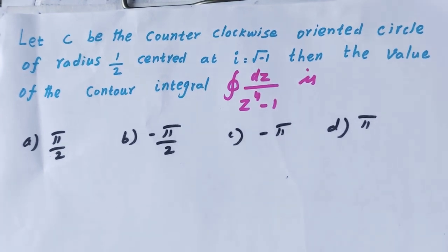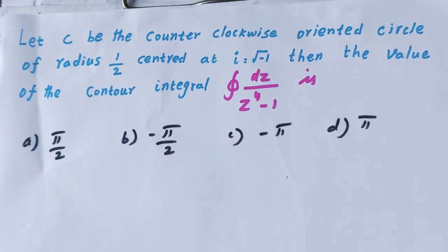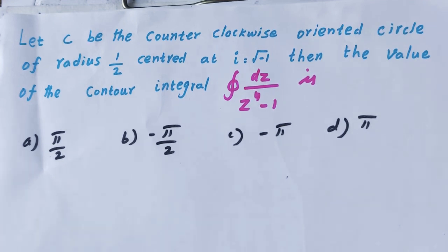Welcome to Kamal Online Marks. Complex analysis is our objective question. Let C be the counterclockwise oriented circle of radius 1/2 centered at i. Then the value of the contour integral — closed integral of dz divided by z⁴ minus 1 — is?